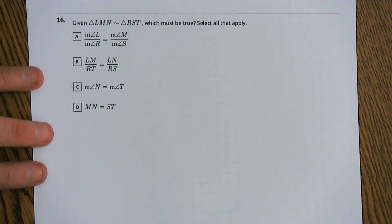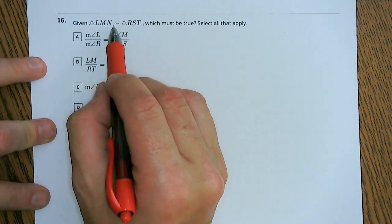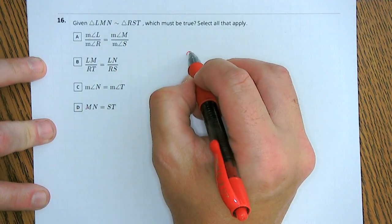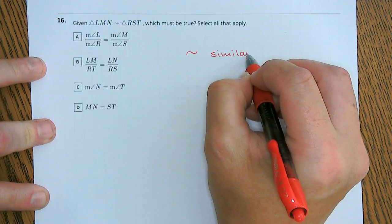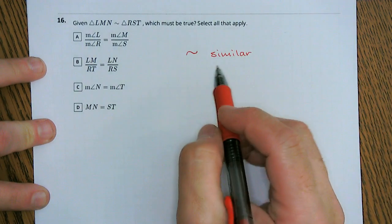Last question for today. So given that triangle LMN is similar, now remember this symbol right here, this little tilde means similar. Similar, not congruent, similar.